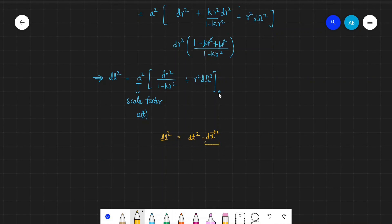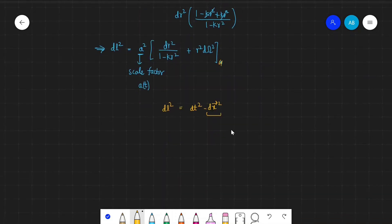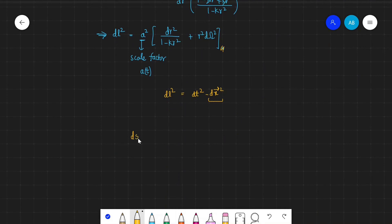...we put this dl² here. Hence the FLRW metric is given as ds² equals dt² minus a, which is a function of time, squared, multiplied by dr² upon 1 minus kr² plus r² dω².